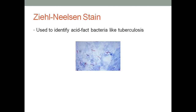The acid fast stain, also known as the Ziehl-Neelsen stain, is reserved mainly for microbes that have high lipid content — for example, those that cause tuberculosis. Smears are first stained with a red stain; acid fast organisms such as mycobacteria retain the red stain when treated with a solution of acid alcohol. Bacteria that appear red after the acid fast technique are referred to as acid fast.